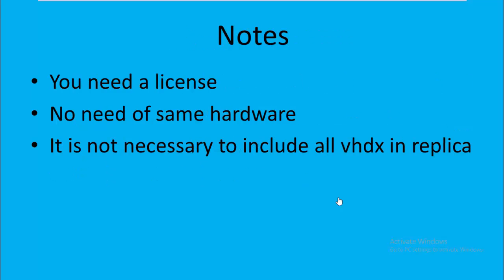Some key things to note: you need a license to run a virtual machine in the replica or target site. You need a license for the VM instance. If you have more than two, consider a datacenter license. If you have just one, two, or three machines, a standard license will do. It doesn't matter if you use the same hardware or different hardware, and it is not necessary to include all VHDs in the replication.